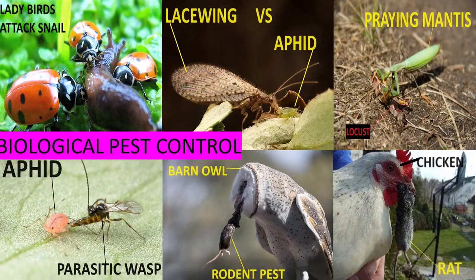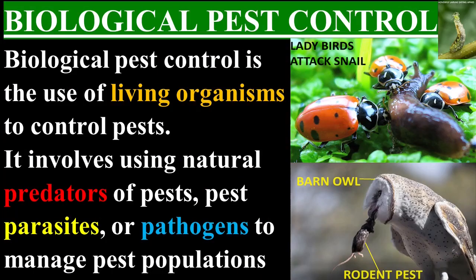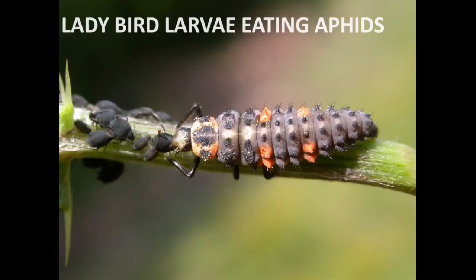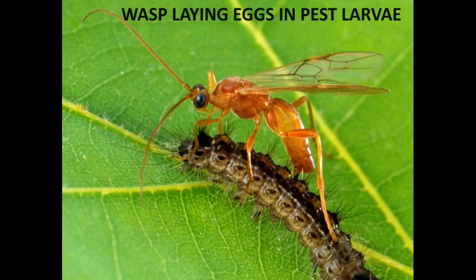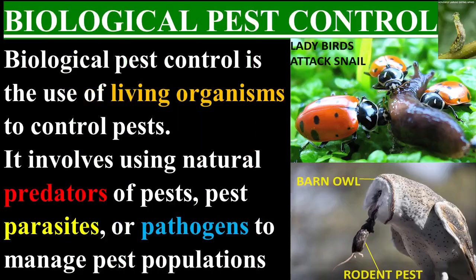Biological pest control is the use of living organisms to control pests. It involves using natural predators of pests, pest parasites, or pathogens to manage pest populations.